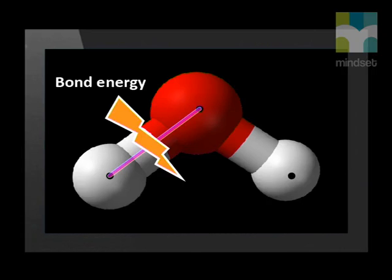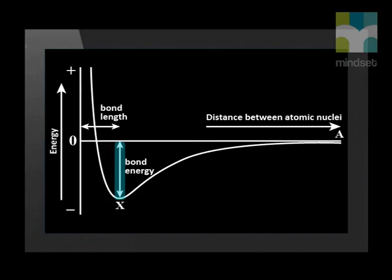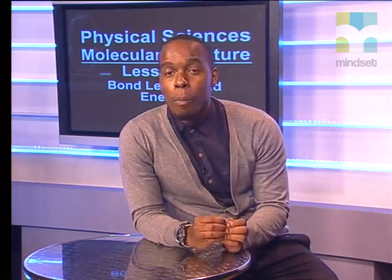Because the bonded atoms are stable, energy must be added to pull them apart. The amount of energy needed to break a bond is that bond's bond energy. This is the same amount of energy as the energy the two nuclei lost when the bond between them formed. Let's ask Nelly to help us understand how bond energy is related to bond length, atom size, and the number of bonds between atoms.